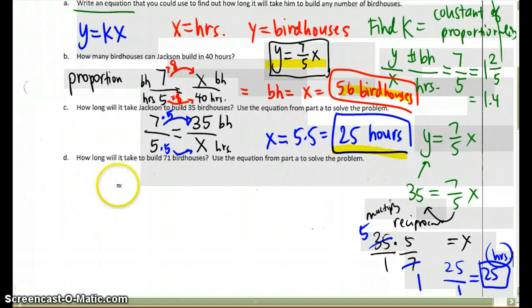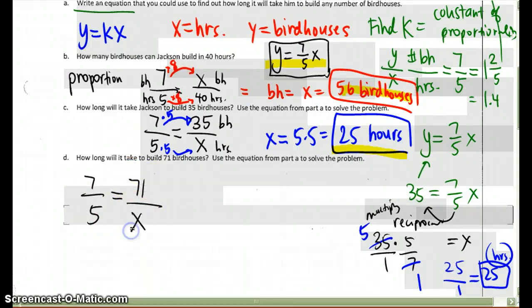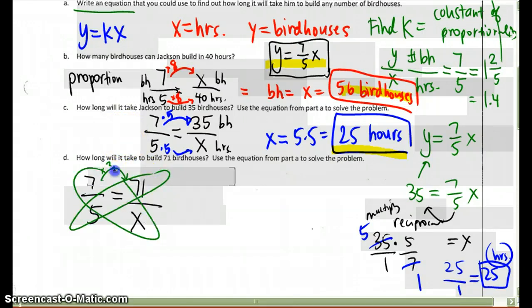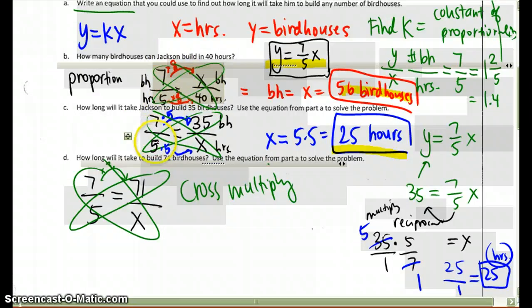For letter D, the way we would set it up, again, we would keep 7 over 5, because that's the ratio that they gave us. And then since we've got 71 birdhouses, and I'm looking for the number of hours, my second ratio would be 71 over X. Now for this one, 7 times something cannot give us 71, so instead, we have to use cross-multiplication to solve. We could have done that same thing here in C and B, but it was much easier to just multiply directly.